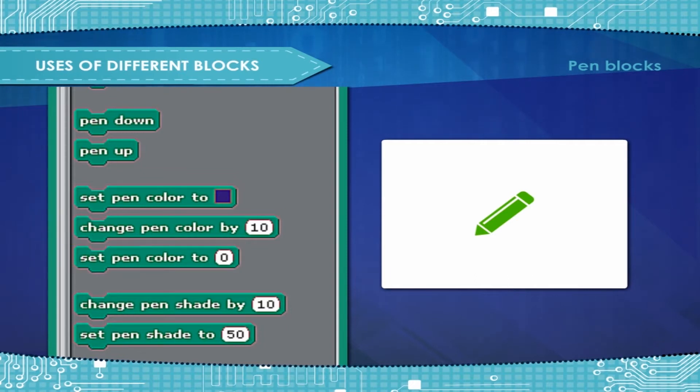Set pen color to number sets the pen color to the specified amount. Change pen shade by changes the pen shade by the specified amount.